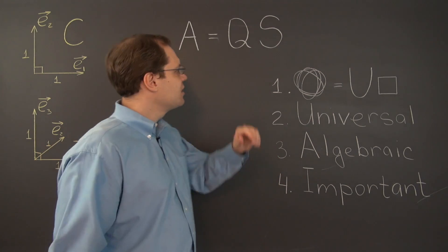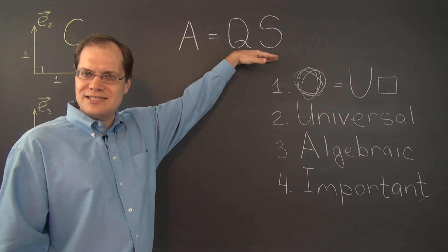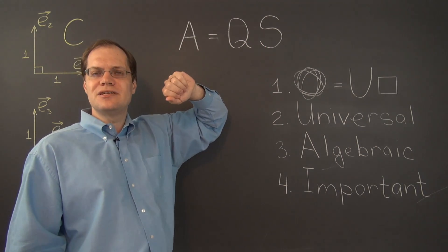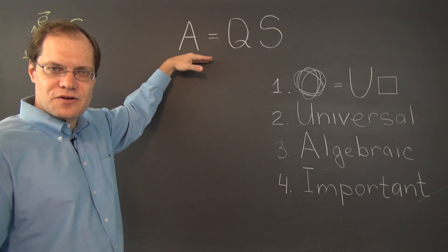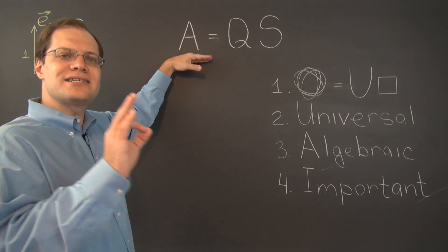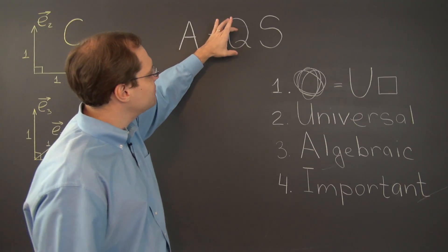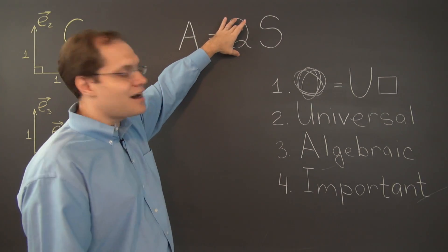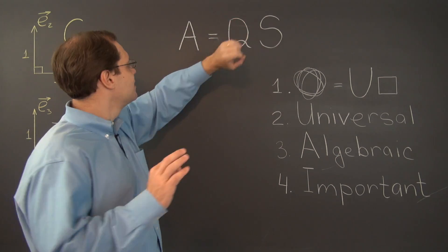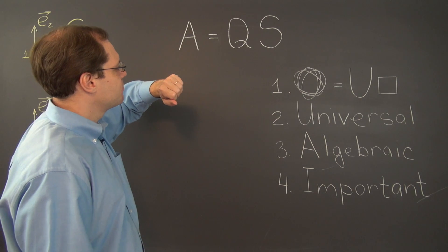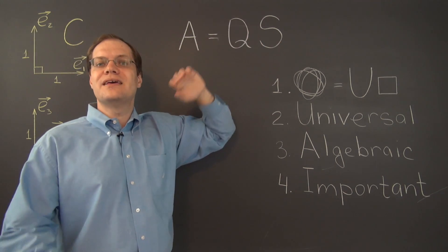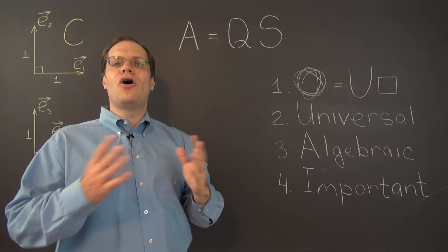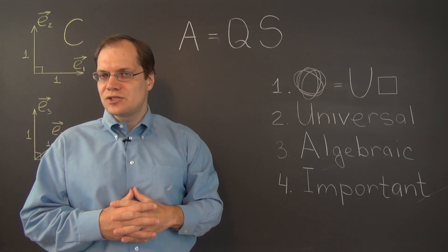Now, nothing like that can occur as far as this decomposition is concerned. This decomposition is available for any matrix A whatsoever, including later on rectangular matrices. We'll have to talk about very carefully what orthogonal means in the case of rectangular matrices. But nothing can go wrong with this theorem. It's available, this decomposition is available for all matrices A whatsoever.